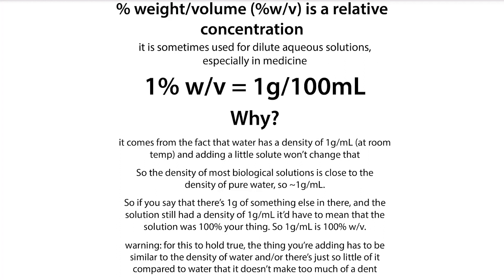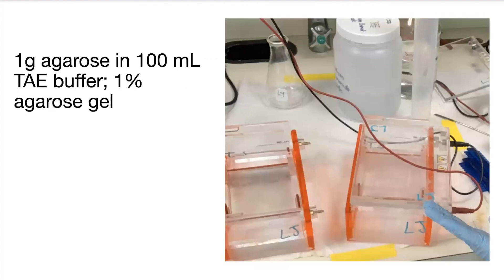So we can use this simplification that says, because we're not going to be changing the density, we can just weigh out the solid and measure out the liquid rather than try to do them in the same units. This comes in handy when we're doing something like pouring an agarose gel to separate DNA fragments. We commonly make a 1% agarose gel — we can just weigh out one gram of agarose and mix it with 100 mils of our buffer to make a 1% gel.